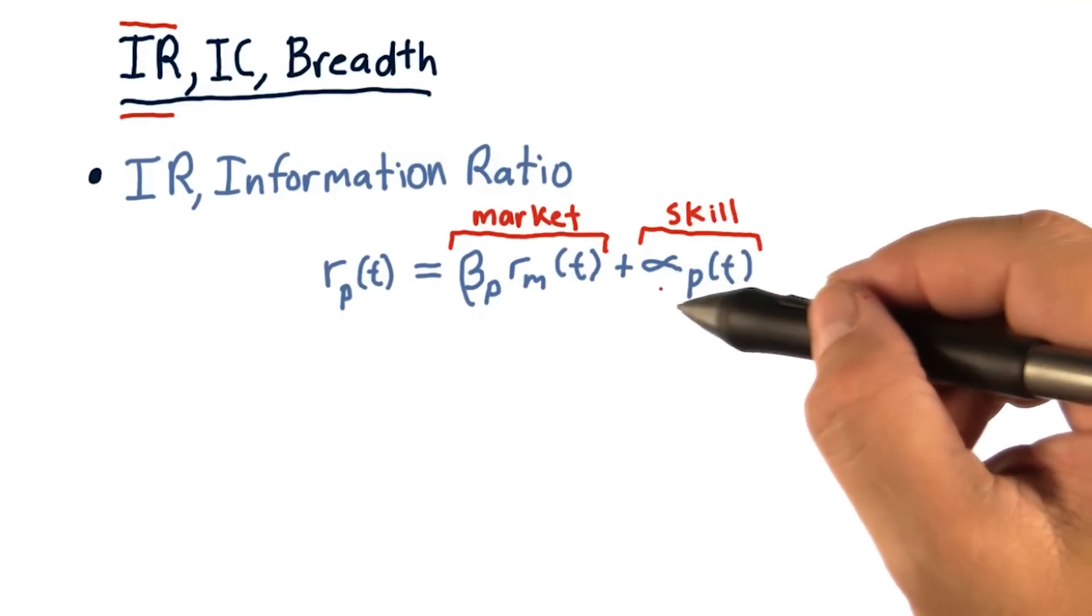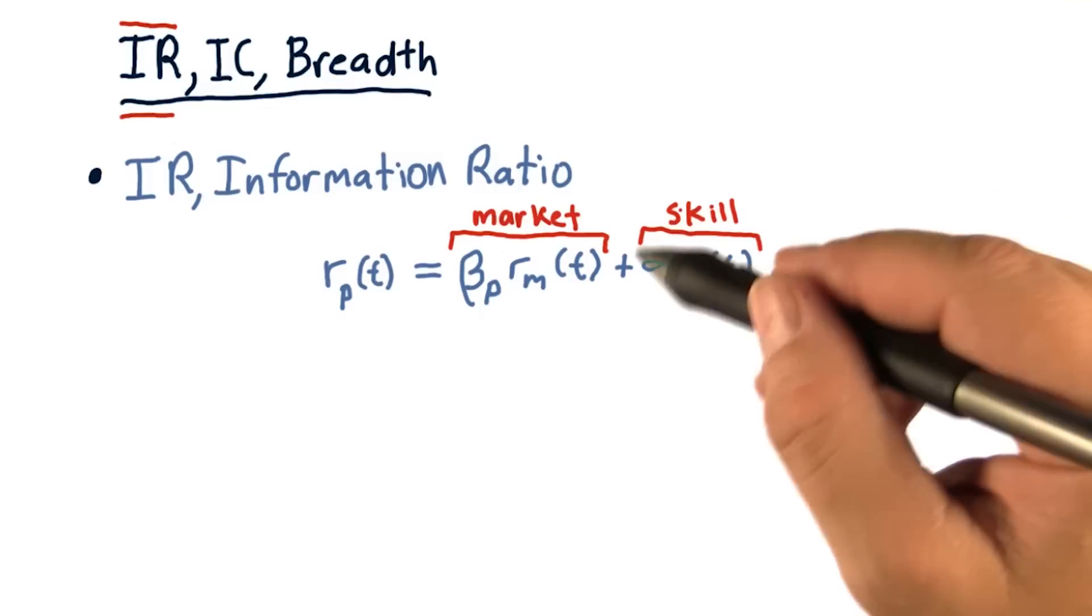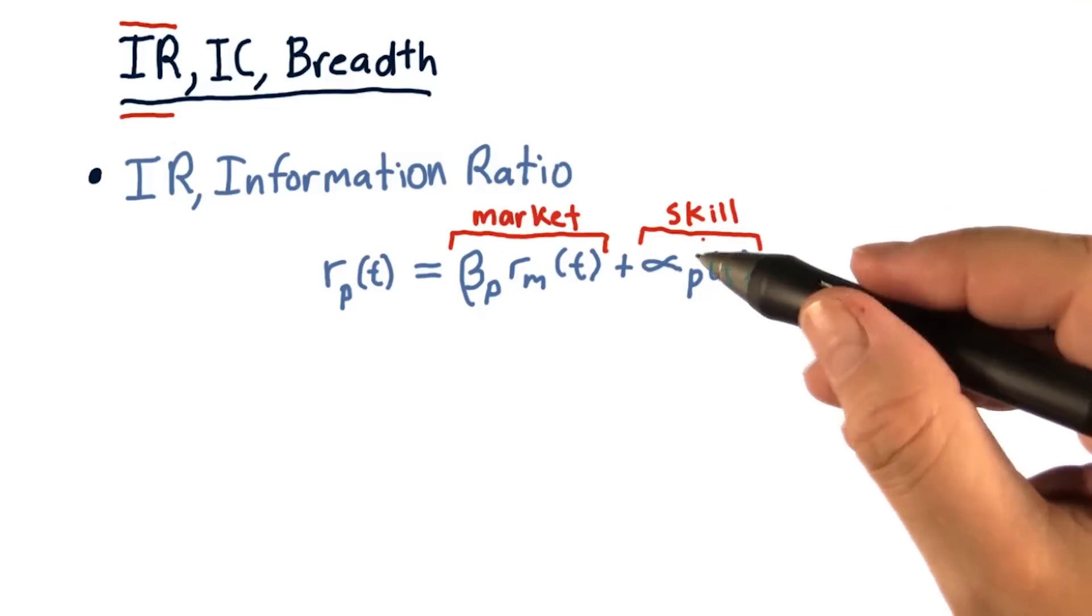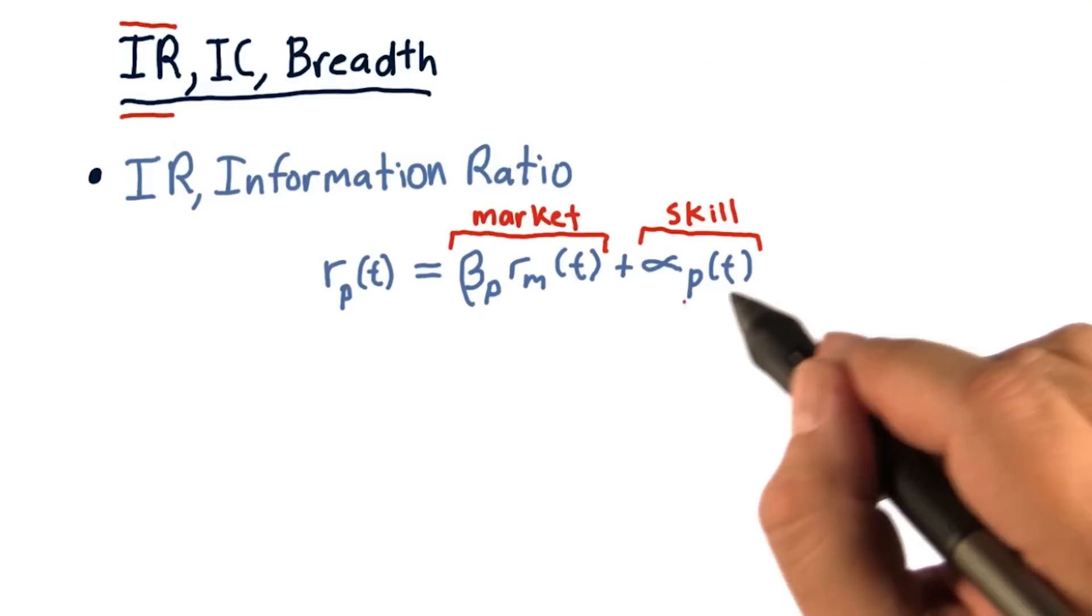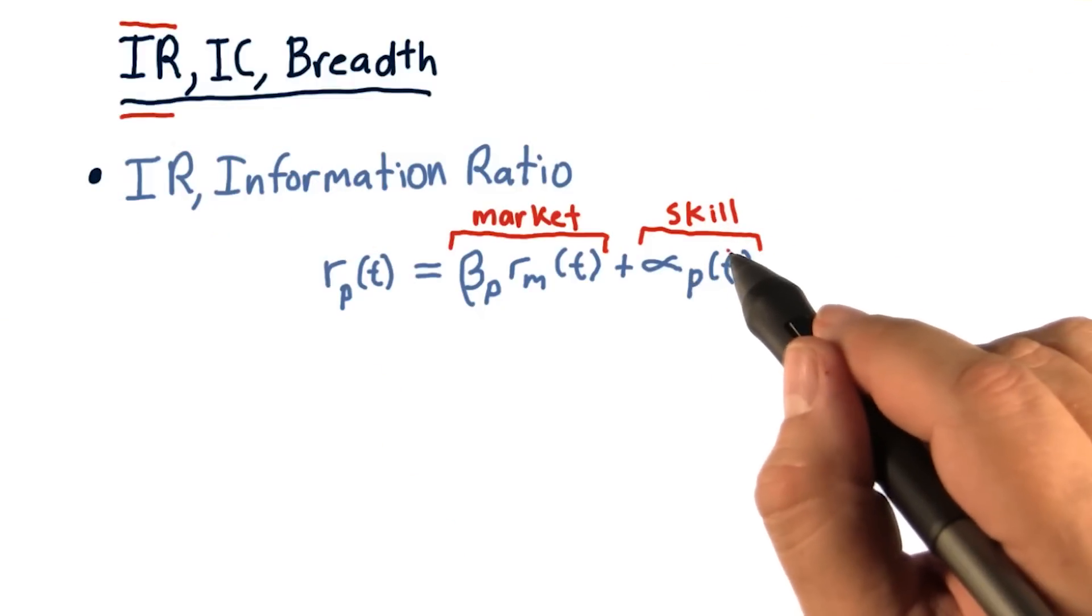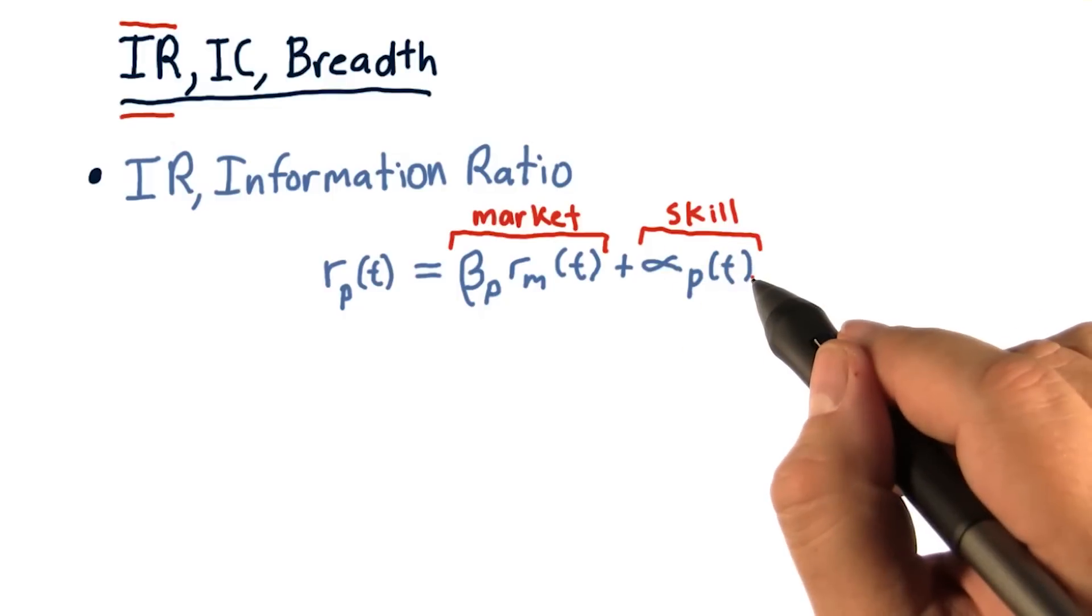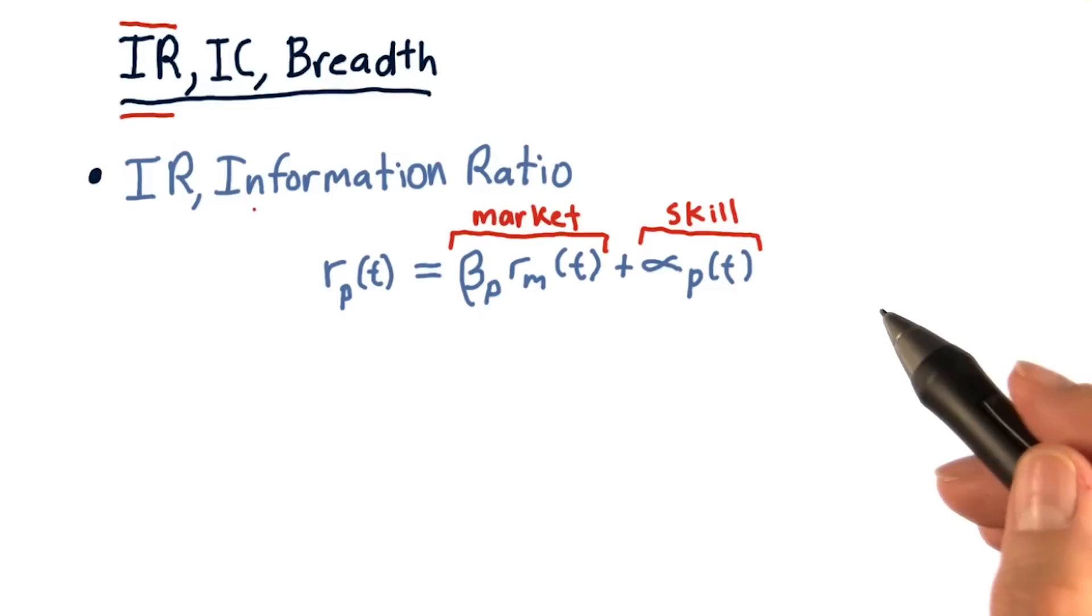And we can calculate the Sharpe ratio, essentially, of this component, just like we can calculate the Sharpe ratio of an entire portfolio. But we can focus on this skill component. And essentially, the Sharpe ratio of this skill component is the information ratio.